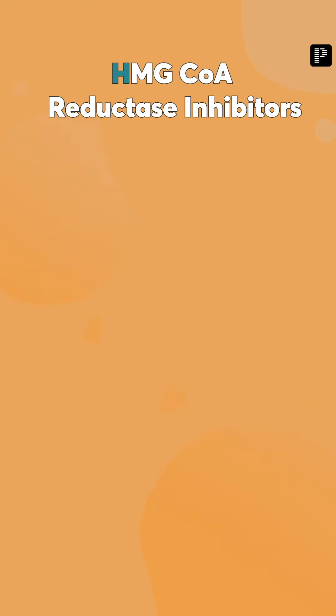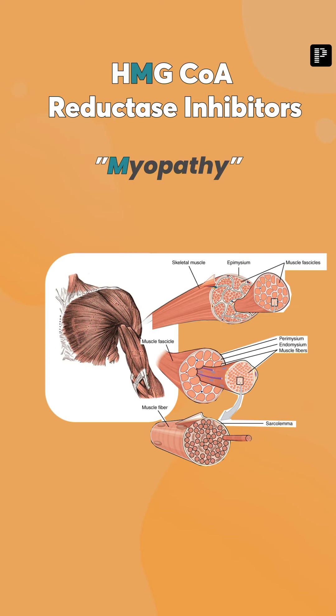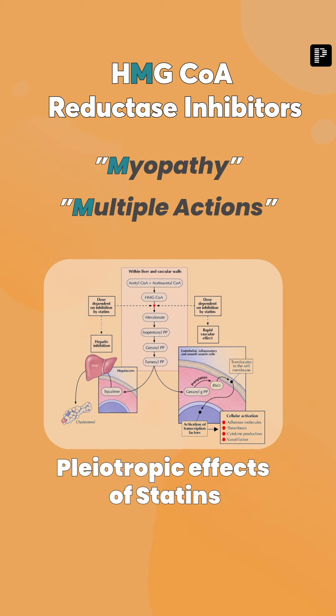The next letter is M. These drugs can cause myopathy, meaning muscle pain. One more M is for multiple actions — so statins have pleiotropic effects.